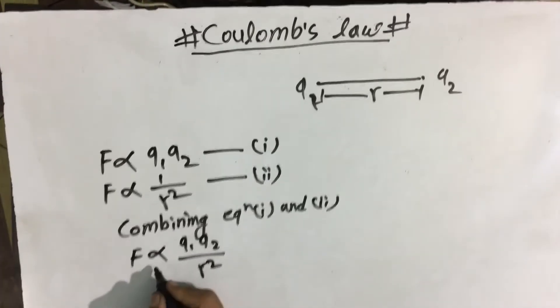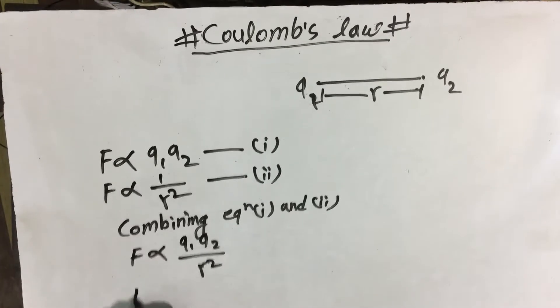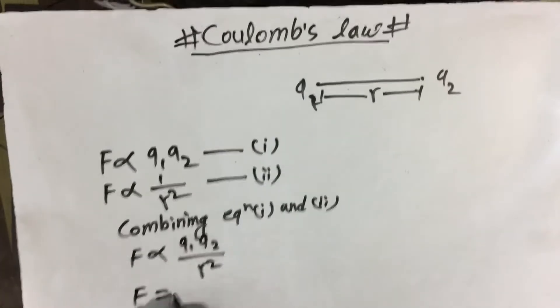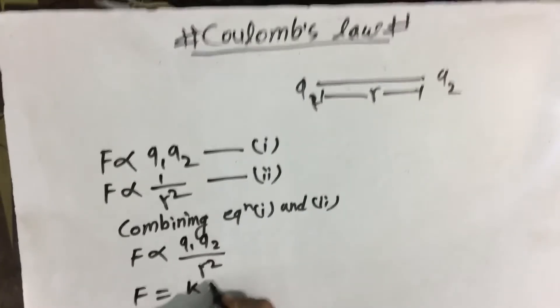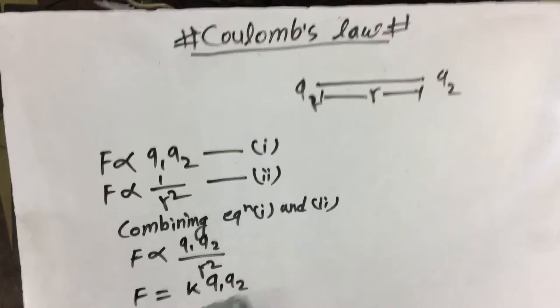Removing the proportional sign, we introduce a constant term K, giving F equals K Q1 Q2 by R square.